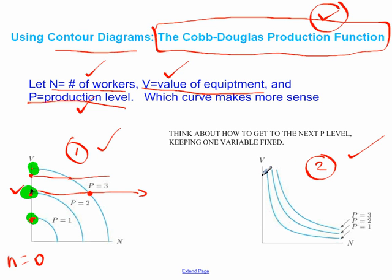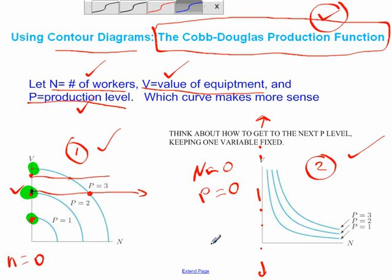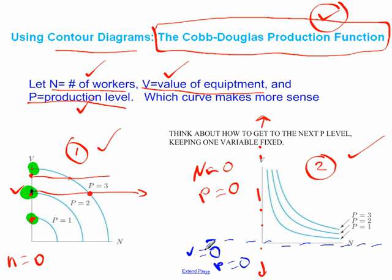This makes much more sense. We've got a vertical asymptote here, which says that if you have no workers, so if n equals zero, then production equals zero. And similarly, we've got a horizontal asymptote, which says that if I have no equipment, if the value of my equipment is zero, then my production equals zero. In other words, if the value is zero, it means I have no equipment. If I have no equipment, I can't produce. So this curve makes much more sense if you look at those end points.